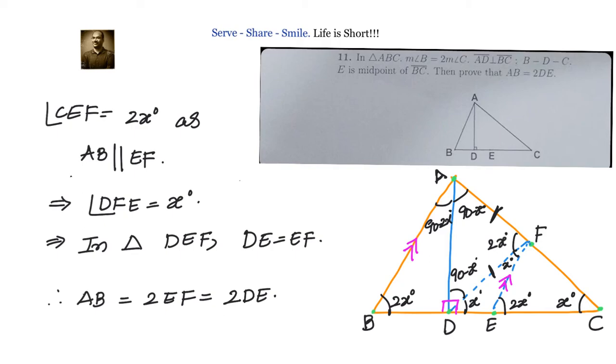the circumcenter is the midpoint of the hypotenuse. By filling in all the angles, we understood that triangle DEF is an isosceles triangle. The base angles are equal, so DE equals EF. Whatever we got earlier, AB equals 2EF, can be substituted by AB equals 2 times DE.